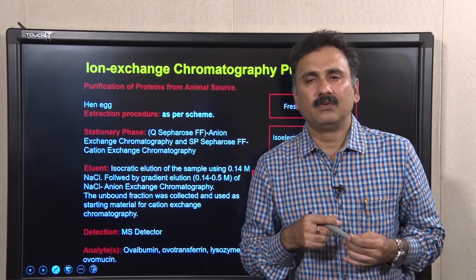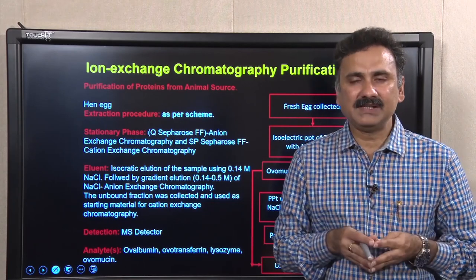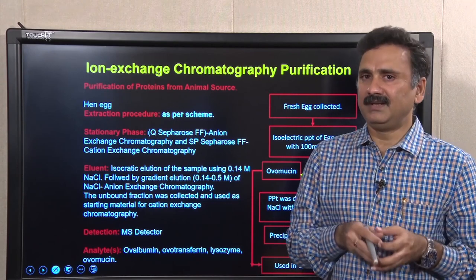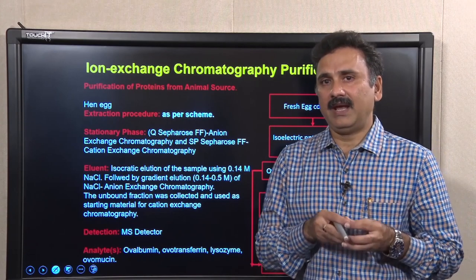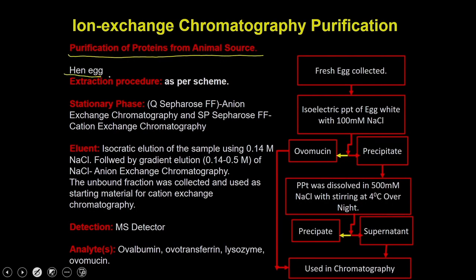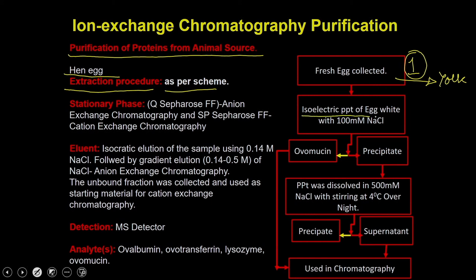The third example deals with animal cells — specifically, how to isolate proteins from a hen egg. The objective is to purify protein from this animal source. In the extraction procedure, collect fresh eggs, break them open, and remove the yolk. Take only the egg white and perform isoelectric precipitation using 100 mM NaCl, yielding two fractions: a supernatant containing ovomyosin, and a precipitate.